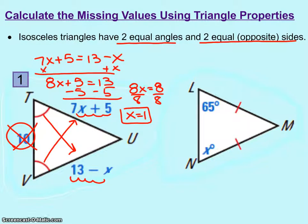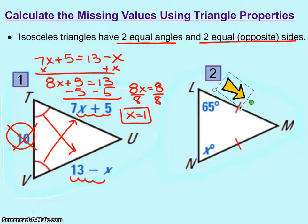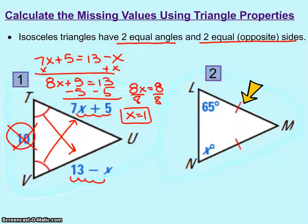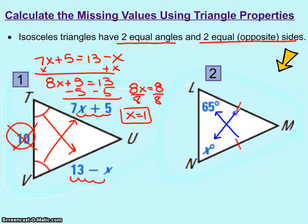In the second problem on the right, we are given two equal sides. With those two sides being equal, we assume the angles opposite those sides will be equal. For this problem, we know that x is simply 65.